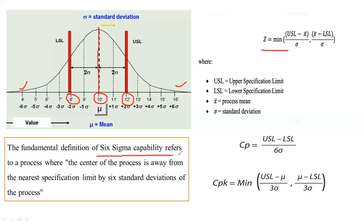This is the fundamental definition: Six Sigma capability refers to a process where the mean value is away from the nearest specification limit by six standard deviations. The difference from the mean to the nearest specification — either lower or upper — divided by the current standard deviation gives the sigma level. If that ratio is 6, it's a Six Sigma process; if it's 4, it's a Four Sigma process.